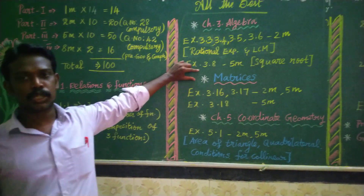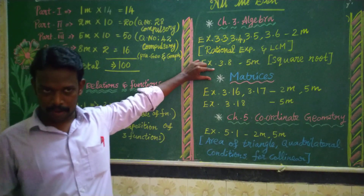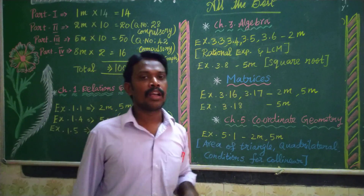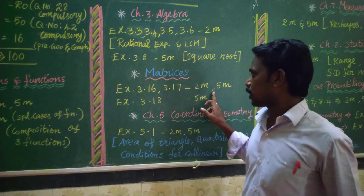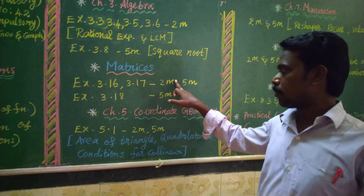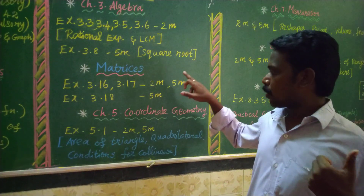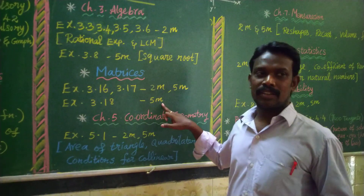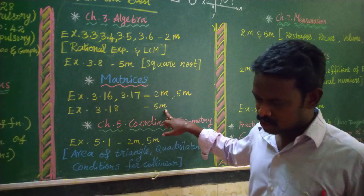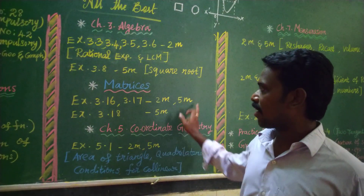This is the matrices section. The matrices carry 2-mark and 5-mark questions. Exercises 3.16 and 3.17 — these are 2-mark and 5-mark questions. Exercise 3.18 covers construction of matrices — 2x2 matrices and 3x3 matrices. This is already easy and it is worth 5 marks. For example: if A squared equals 70, and A plus I squared equals 0 — that is the most important area of matrices.